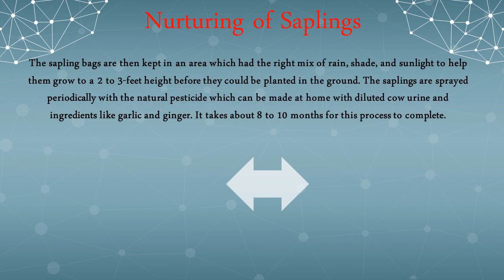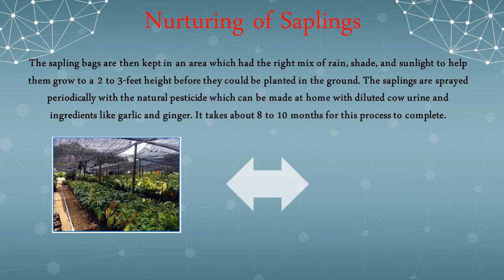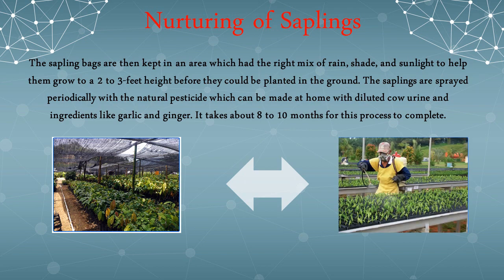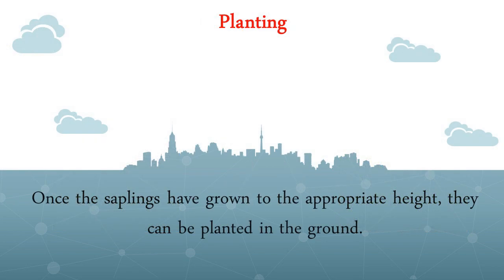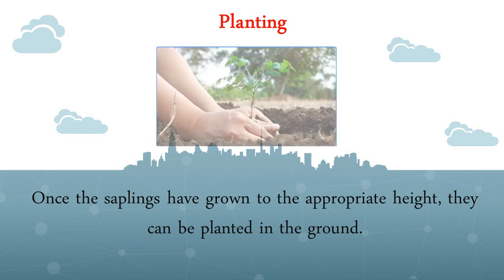The fifth step is nurturing of the saplings. The sapling bags are kept in an area with the right mix of rain, shade, and sunlight to help them grow to a 2 to 3 feet height before they can be planted in the ground. The saplings are sprayed periodically with natural pesticides made at home with diluted cow urine and ingredients like garlic and ginger. It takes about 8 to 10 months for the process to complete. The sixth and final step is planting — once the saplings have grown to the appropriate height, they can be planted in the ground.